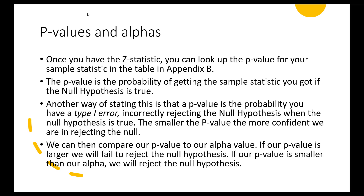Once we've calculated the z-statistic, you can look up the p-value in the table in Appendix B. The p-value is the probability of getting the sample statistic you got if the null hypothesis is true. Another way of stating this is that a p-value is the probability of a Type 1 error — incorrectly rejecting the null hypothesis when it is true. The smaller the p-value, the more confident we are in rejecting the null. We then compare our p-value to our alpha value: if our p-value is larger, we fail to reject the null hypothesis; if our p-value is smaller than alpha, we reject the null hypothesis.